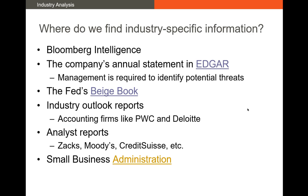There are other resources out there as well. A lot of accounting firms — PwC is a good example — put out industry outlook reports, such as the outlook for the banking industry in 2024. There are also analyst reports from firms like Zacks, Moody's, or S&P covering particular industries. The Small Business Administration will also sometimes put out reports on certain industry conditions.